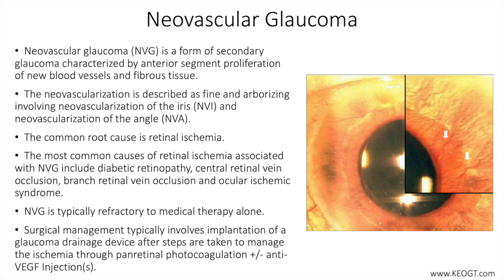In fact, any patient at risk of developing NVG should undergo periodic inspection of the anterior chamber angle by gonioscopy, since findings in the angle might precede slit lamp findings on the pupillary margin or iris stroma, as can be the case especially in patients with dark irides. NVI can be associated with ectropion uvea, which is the presence of iris pigment epithelium on the anterior surface of the iris in later stages.